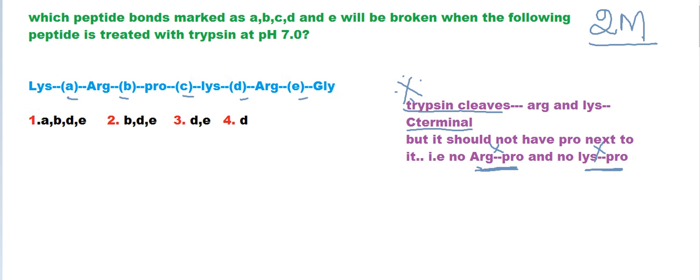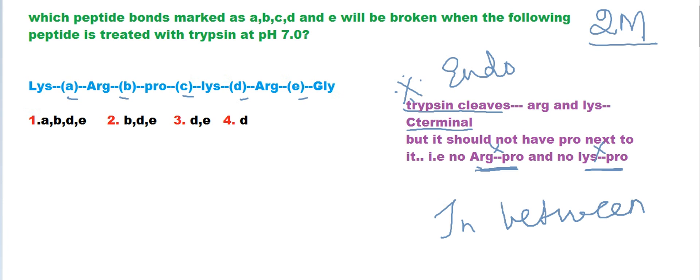Now let us scan for lysine. Also remember that trypsin is an endopeptidase. When I say endopeptidase, it means it will never produce a monomer — a single free amino acid. It should always produce a dipeptide, because it acts in between the protein or peptide sequence, never at the ends.